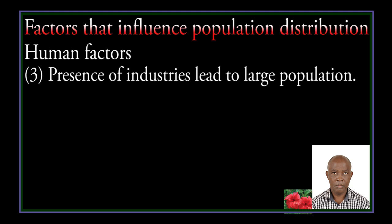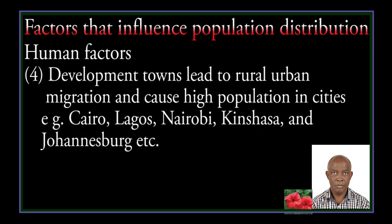The presence of industries leads to large population. Development of towns also leads to rural-urban migration and causes high population in cities — for example, Cairo, Lagos, Nairobi, Kinshasa, and Johannesburg.